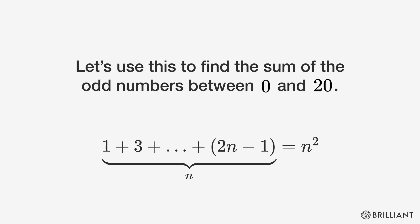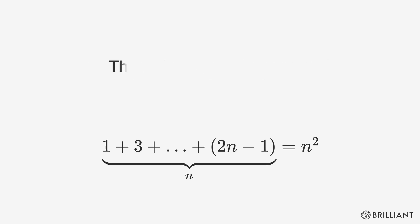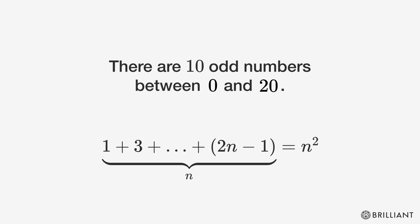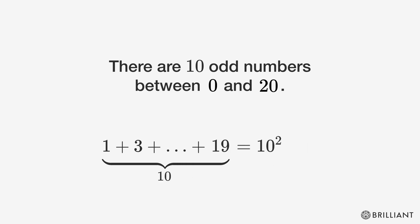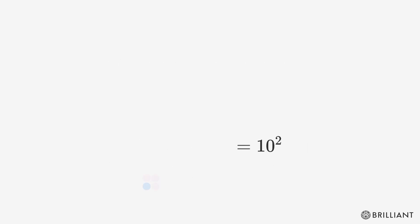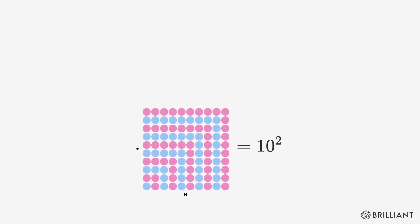Let's use this to find the sum of the odd numbers between 0 and 20. There are 10 odd numbers between 0 and 20, so their sum must be 10 squared, or 100.